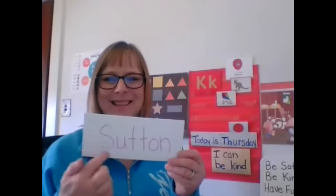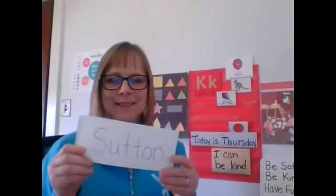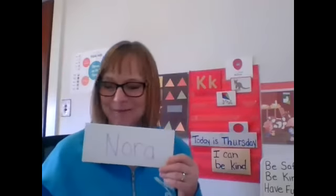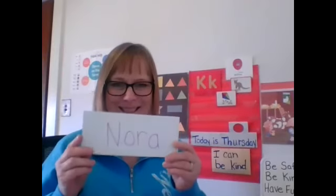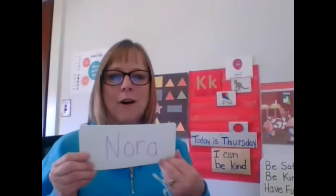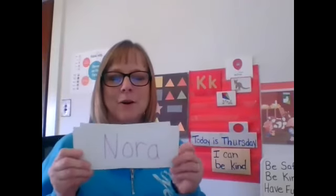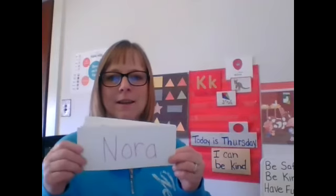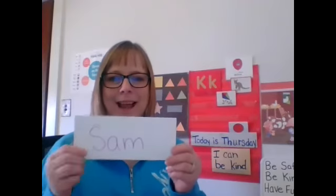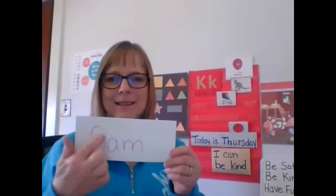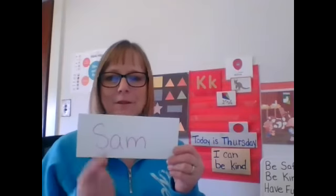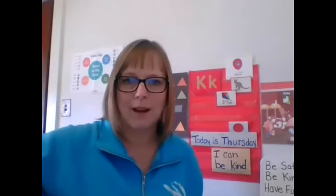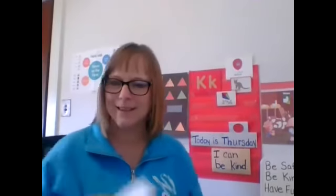Letton — Letton starts with the letter S. Your last name starts with a K, doesn't it? Yes, it does. Nora — Nora starts with the letter N. And Sam — Sam starts with the letter S. His last name starts with the letter K, doesn't it, Sam?